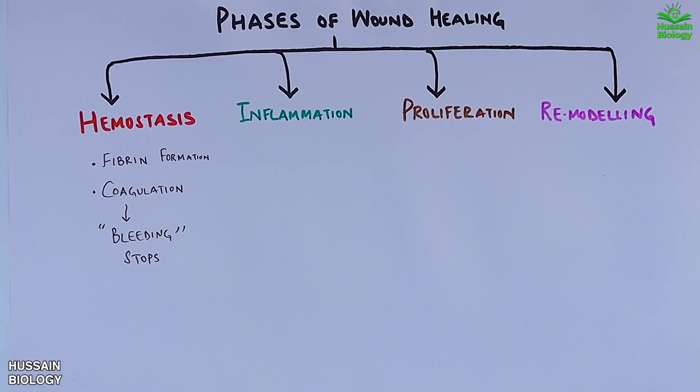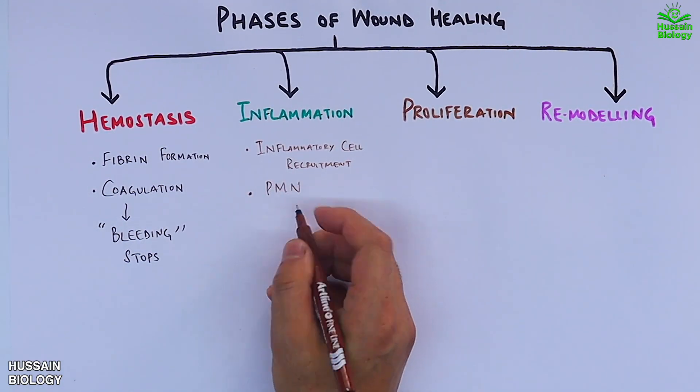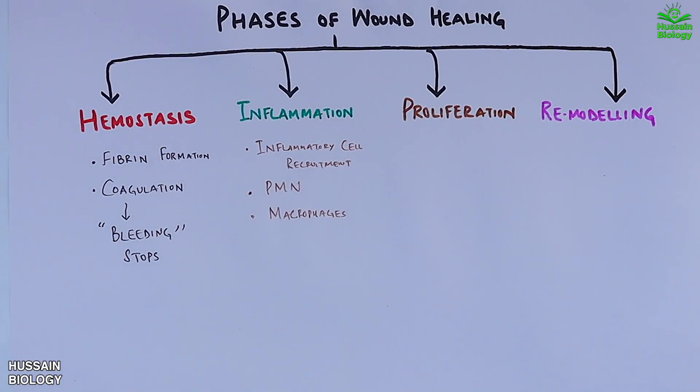In the inflammation step we have the recruitment of inflammatory cells like neutrophils, PMN, and macrophages.